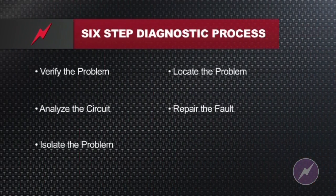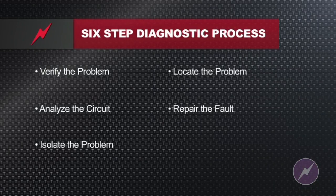Once you've located the problem, the next step is to repair the fault, whatever that fault happens to be. When you're dealing with wiring schematic issues or any types of problems within a vehicle's circuit, once it's analyzed and you've located the fault, they're going to fall into three categories: opens, shorts, and high resistance.